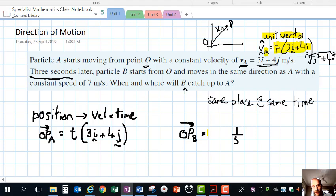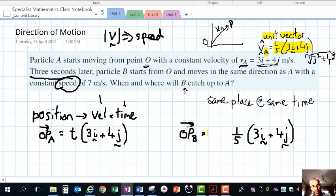So we have 1/5(3i + 4j) for the unit vector. We have to consider the time, and since we've got a unit vector giving us direction, we need the magnitude of velocity and the time. The magnitude of velocity is speed, which is 7. So we multiply by 7.